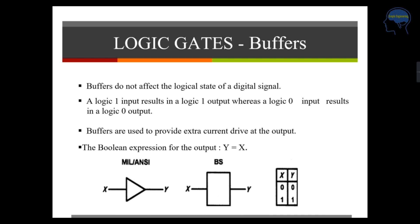First we will see what is a buffer. The symbol is represented in this form. It does not affect the logic state of a digital signal. Logic 1 input results in logic 1 output, whereas logic 0 input results in logic 0 output. These buffers are used to provide extra current drive at the output. The logic expression for the output is Y equal to X. So if you give a 0 input you get 0 output, and if you give 1 as input you get 1 as output.